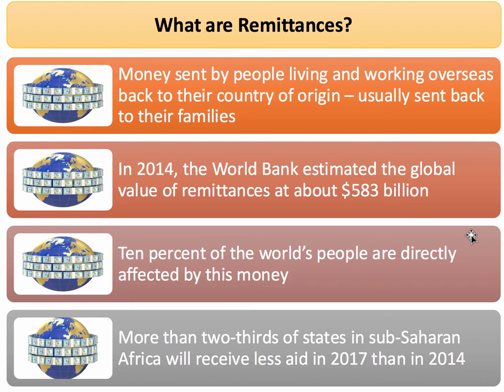Indeed, they also estimated that one person in 10 of the world's people — that's over 700 million people — are directly affected by remittances. A lot of sub-Saharan African countries expect to receive less aid in 2017 than they did in 2014, so remittances are becoming increasingly significant for those nations.